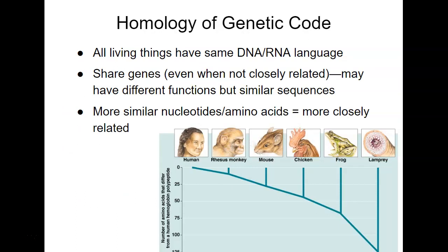Homology is actual relatedness. All living things have the same DNA and RNA language and we share a lot of genes. By looking at what percentage of our DNA is the same, we can get an idea of how related we are. The more similar the DNA, the more closely related two organisms are. For example, a human and a rhesus monkey are way more related to each other than a human and a chicken, or a human and a frog.